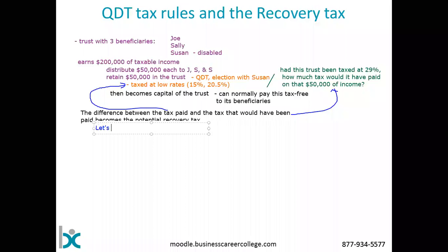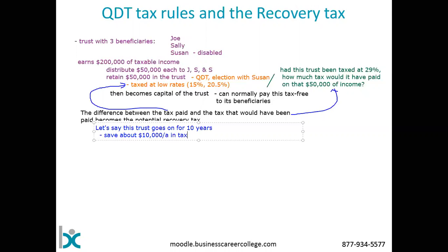Let's say this trust goes on for 10 years and we continue to retain about a quarter of the trust income every year, saving some tax each year. That's roughly $50,000 times about a 20% tax rate difference — about $10,000 a year in tax savings. Over 10 years, that's a cumulative $100,000 in tax savings.